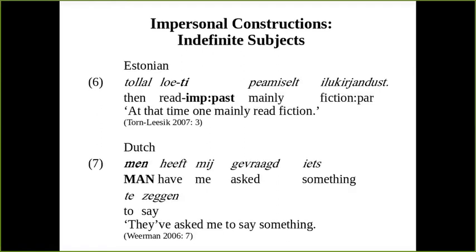Turning to indefinite subjects: example six from Estonian, 'at that time, one mainly read fiction.' Indefinite subjects oftentimes indicate some sort of human reference. Here there is a dedicated impersonal verbal construction that also codes past tense. Whereas in example seven from Dutch, 'they've asked me to say something,' we have the pronoun 'men,' which comes from the word for 'man,' referring to indefinite, unspecified human reference — in this case plural: 'they have asked me to say something.'